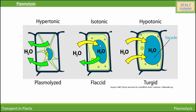A plasmolyzed cell in isotonic solution is one in which the plasma membrane does not press tightly against the cell wall. As the concentration is similar outside and inside the cell, water diffuses in both directions. Next is the diagram of a turgid cell in a hypotonic solution. A turgid cell is one in which the cell membrane presses tightly against the cell wall because water moves inside the cell through osmosis, as osmotic concentration is higher inside the cell. So, water moves inside the cell and makes the cell turgid.